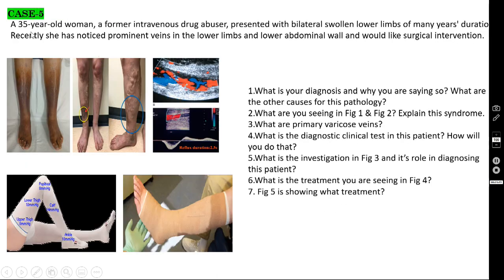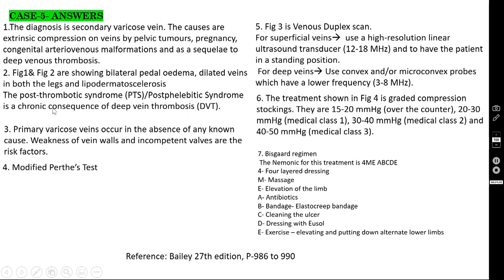Case number 5: a 35-year-old woman, a former intravenous drug abuser, presented with bilateral swollen lower limbs of many years duration. She has noticed prominent veins in the lower limb and lower abdominal wall and would like surgical intervention. She might have developed DVT which then re-canalized — this is not an acute DVT but a chronic one, called post-phlebitic syndrome. The diagnosis is secondary varicose veins secondary to DVT. Causes include compression of veins by pelvic tumors, pregnancy, congenital AV malformation, and a sequela to deep vein thrombosis.